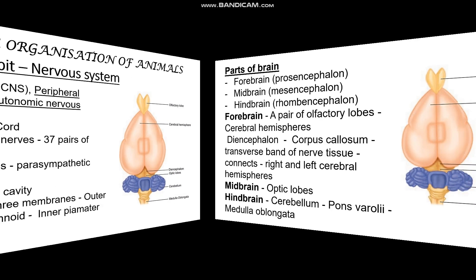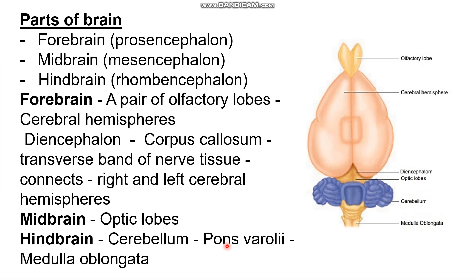Now the parts of the brain. The brain is divided into three parts: forebrain, midbrain, and hindbrain. Their scientific names are prosencephalon, mesencephalon, and rhombencephalon respectively.